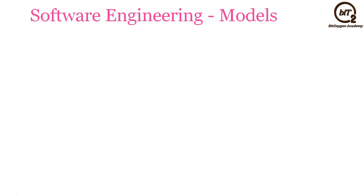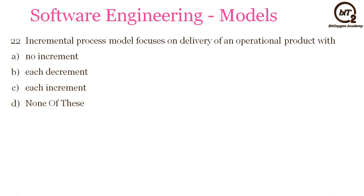The next question is: incremental process model focuses on delivery of an operational product with — no increment, each decrement, each increment, or none of these? Please read the options carefully — the answer will be each increment. The minor mistake you might make is selecting option B after seeing 'each,' but the answer is increment, not decrement.